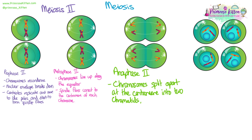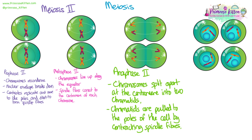Anaphase two: the chromosomes split apart at the centromere and the two chromatids are pulled separately to the poles of the cell by the contracting spindle fibres. These are the replicated copies of each chromosome, so there are two copies of chromosome one and two copies of chromosome two that are identical except for those that have crossed over. This is similar to what happens in mitosis where replicated copies of all 46 chromosomes line up and then chromatids separate — except in mitosis they are identical copies going to each cell, whereas here we have slight differences in some due to crossing over.